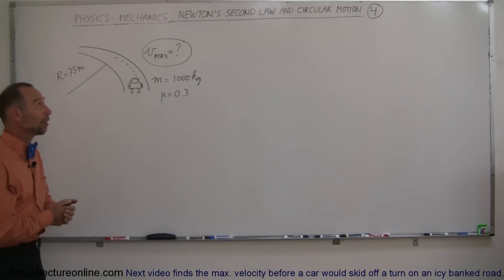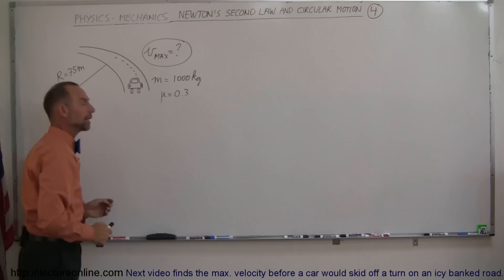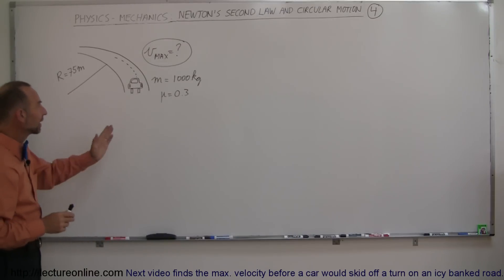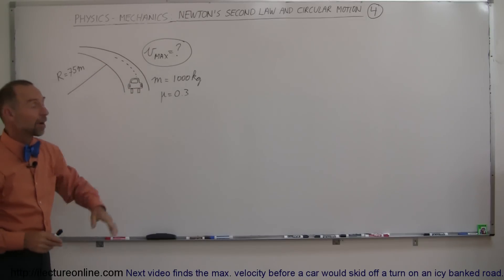Here's another classic problem involving Newton's second law in circular motion. We have a car on the road driving at a certain speed. The road curve has a curvature radius of 75 meters. Let's say the car has a mass of 1,000 kilograms, and the coefficient of friction between the tires and the road is 0.3. How fast can this car drive around this curve before it starts slipping off the road?